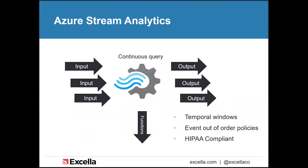The event out of order policy allows you to handle events that arrive late — for example, if you're streaming data from a mobile phone that goes through a Wi-Fi dead zone or a tunnel, events may arrive out of order or delayed. The policy lets you define whether late events should be dropped or buffered to be included. Finally, coming from the medical device and pharma industry, I'm happy to see that Azure Stream Analytics is also HIPAA compliant out-of-the-box — fantastic for anyone working with sensitive data.